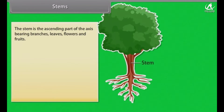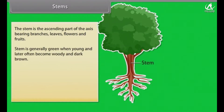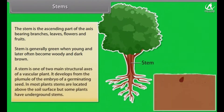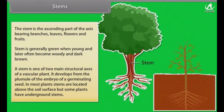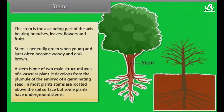The stem is the ascending part of the axis, bearing branches, leaves, flowers and fruits. Stem is generally green when young and later often becomes woody and dark brown. A stem is one of two main structural axes of a vascular plant. It develops from the plumule of the embryo of a germinating seed. In most plants, stems are located above the soil surface, but some plants have underground stems as well.